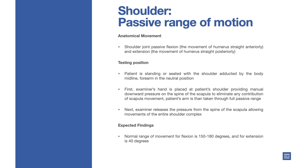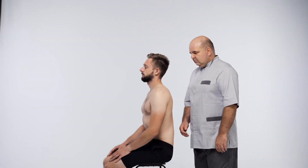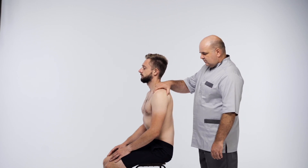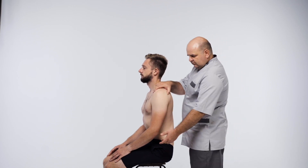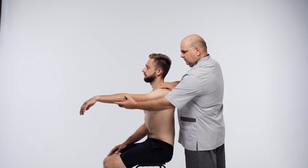Patient is standing or seated with the shoulder adducted by the body midline, forearm in the neutral position. First, the examiner's hand is placed at the patient's shoulder providing manual downward pressure on the spine of the scapula, to eliminate any contribution of scapula movement. The patient's arm is then taken through full passive range.